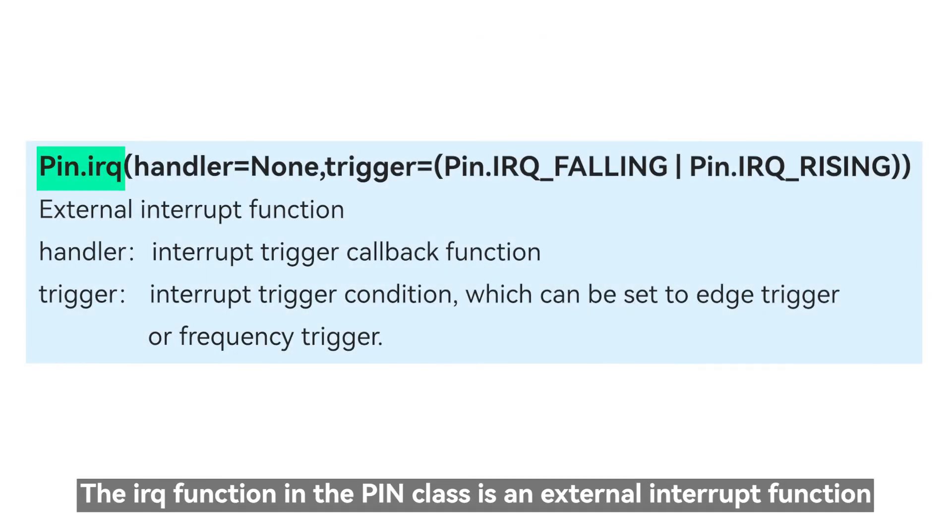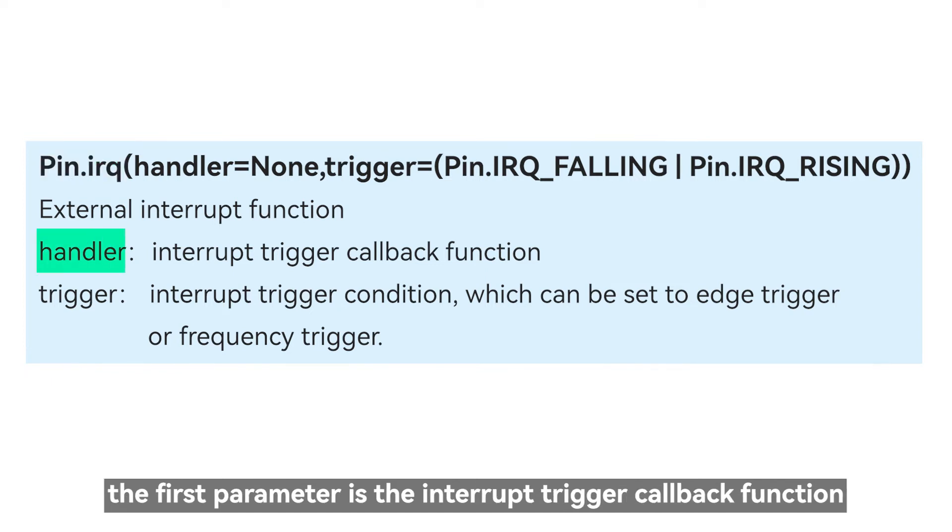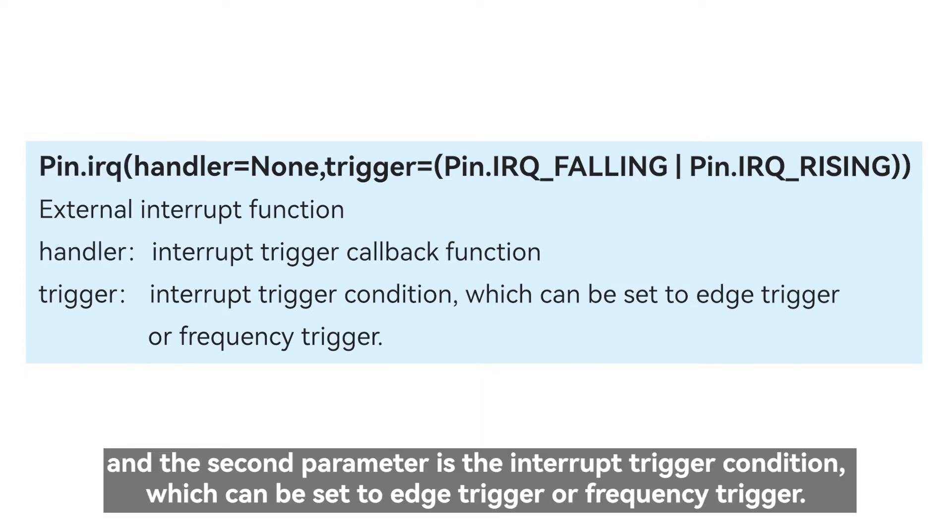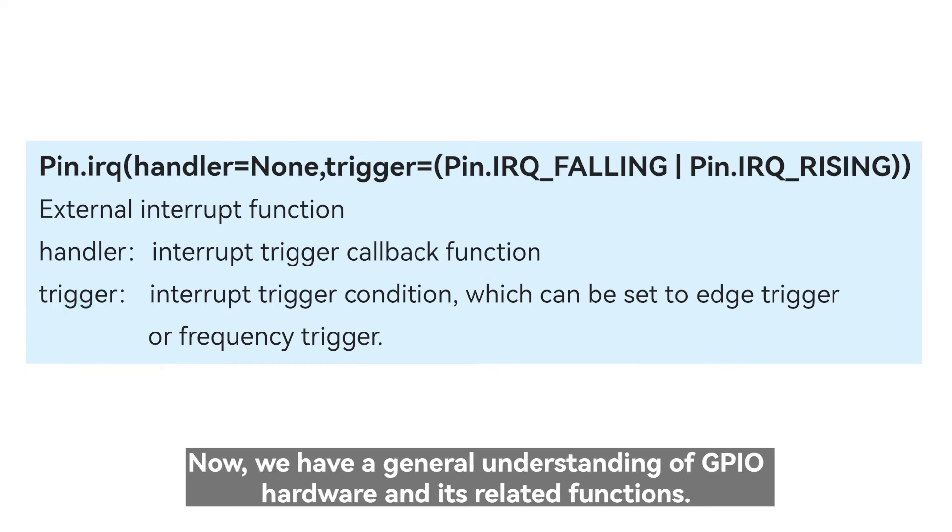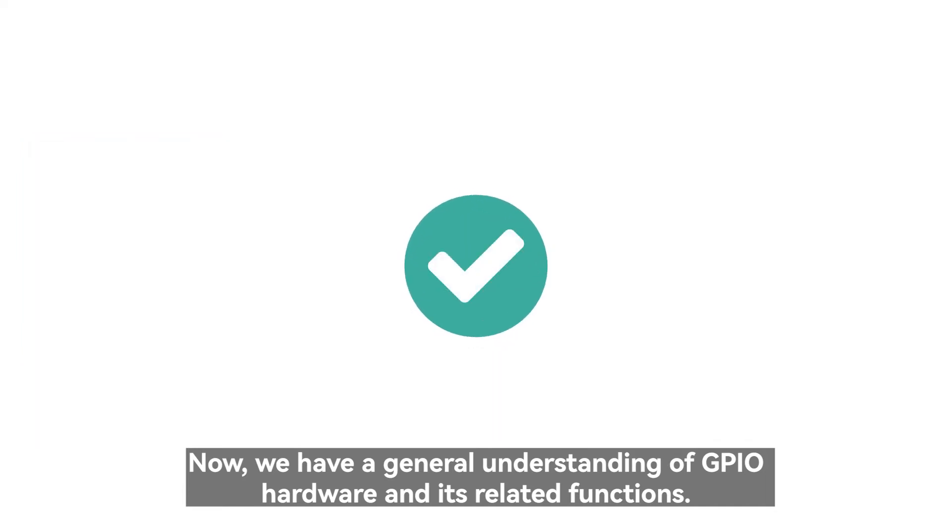The IRQ function in the pin class is an external interrupt function. The first parameter is the interrupt trigger callback function, and the second parameter is the interrupt trigger condition, which can be set to edge trigger or frequency trigger. Now, we have a general understanding of GPIO hardware and its related functions.